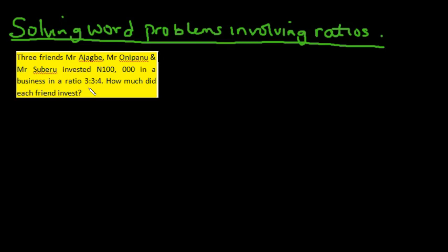This is a word problem because you are expected to derive a mathematical equation or expression from a sentence, which means you need a proper understanding and interpretation of what you have been given. I'm using real names because many students get confused when they see x, y, and z. However, we use those variables for uniformity — you cannot tell your calculator 'Mr. Ajakbe plus Mr. Unipan.' In another country with another language they use something else, so for the sake of uniformity, x, y, z work anywhere.